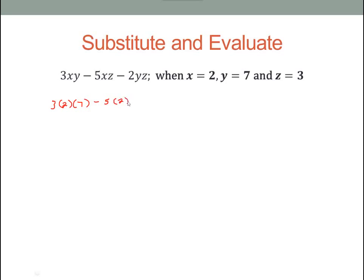So we're going to replace those variables with the given numbers. So 3 times 2 times 7 minus 5 times 2 times 3, and then minus 2 times 7 times 3.